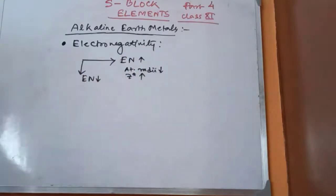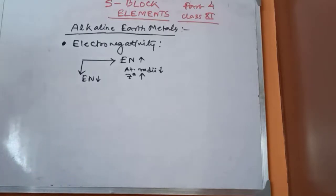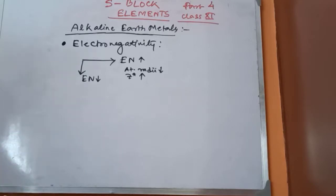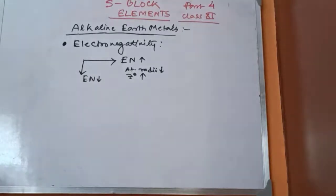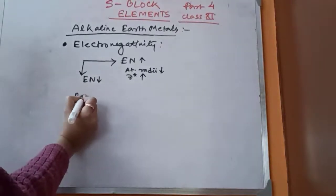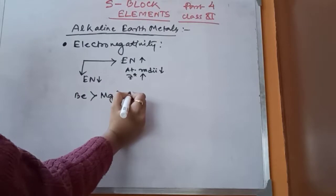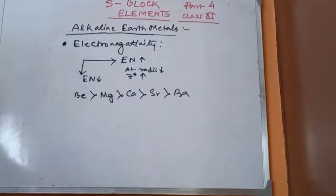Down a group, atomic radii increase. When atomic radii increase, the outer electrons are not strongly pulled by the nucleus, so the incoming electron does not face a greater effective nuclear charge and the tendency of the atoms to accept electrons decreases — electronegativity decreases down the group. The order is: Be > Mg > Ca > Sr > Ba.